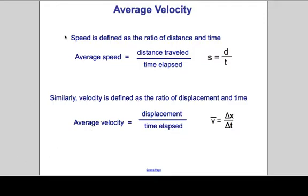As we stated previously, speed is defined as the ratio of distance and time, so distance divided by time is speed. Similarly, velocity is defined as the ratio of displacement per unit time, so it's displacement per unit time.